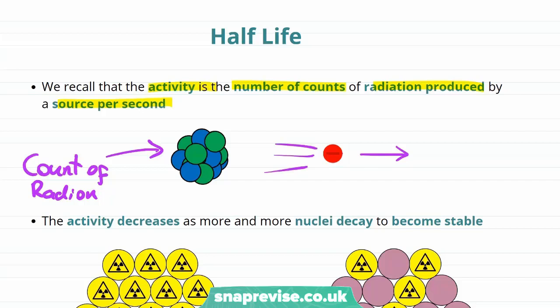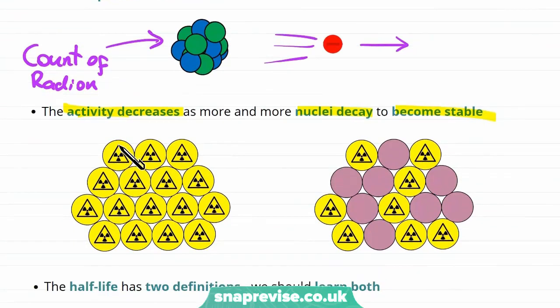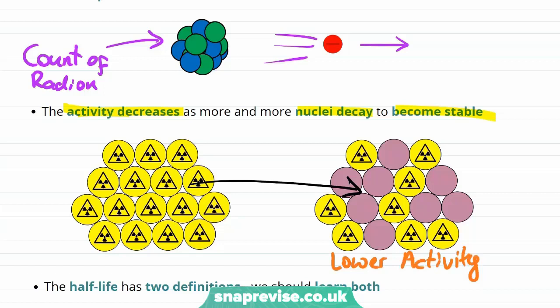But as time goes on, these radioactive atoms will decay, leaving us with less radioactive atoms. So the activity will actually decrease over time. The activity decreases as more and more nuclei decay to become stable. For example, let's imagine this sample decays and eventually ends up looking like this sample. This sample has a lower activity. The half-life is going to give us a way to talk about how quickly the activity of a sample decreases.